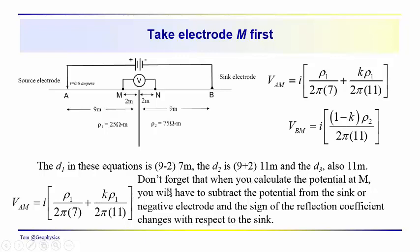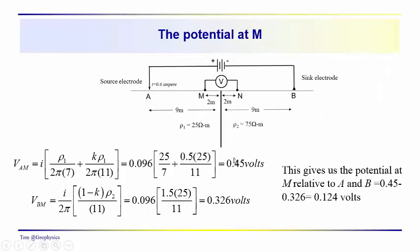You have to subtract the potential from the sink (the negative electrode), and the sign of the reflection coefficient changes with respect to the sink to get the potential difference. Plugging in for the potential at M relative to A, we get 0.45 volts. The potential at M relative to the sink electrode — remembering we switch the sign of the reflection coefficient — gives 0.326 volts, where 0.0986 is 0.6 amperes over 2 pi. The difference of these two terms gives us 0.124 volts.